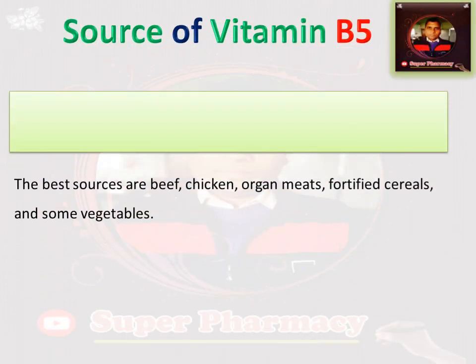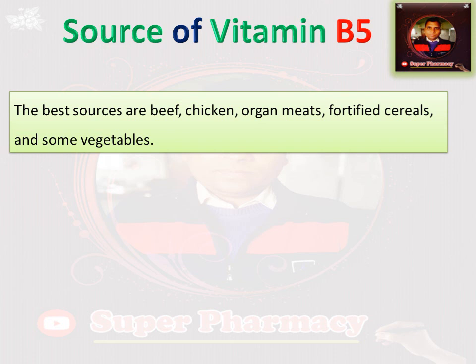The best sources of Vitamin B5 are beef, chicken, organ meats, fortified cereals, and vegetables. It is found in almost all foods, including vegetables.